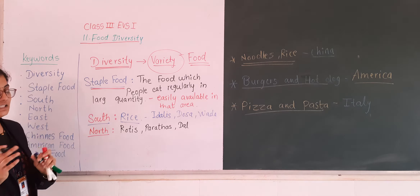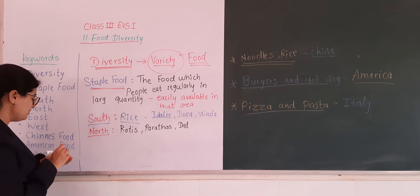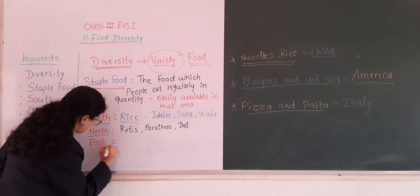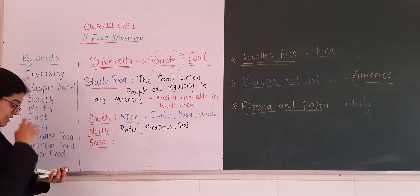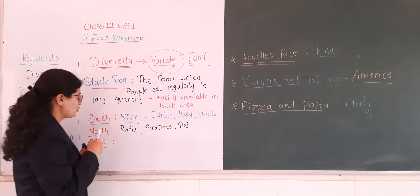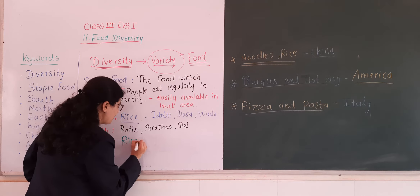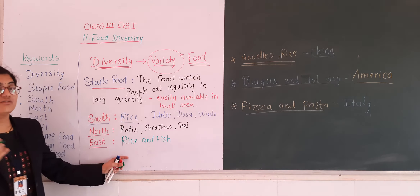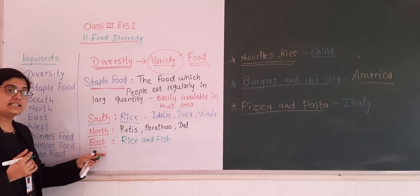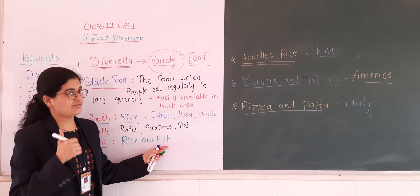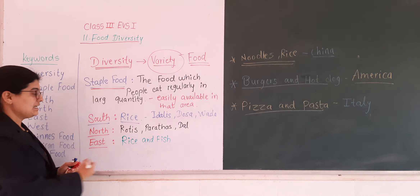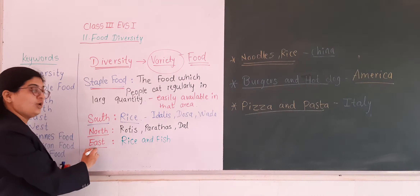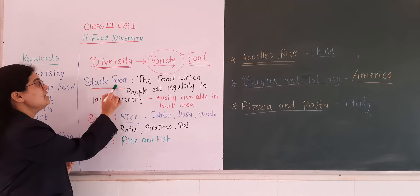In the east region of India, people eat rice and fish. Rice and fish are the staple food items of east India, as they are easily available there.